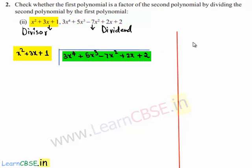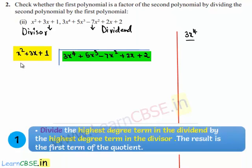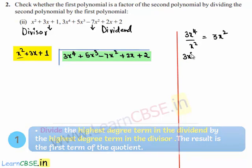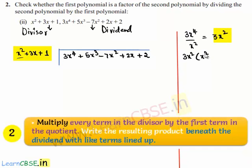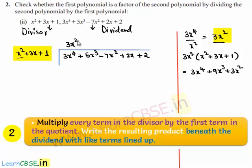The highest degree term of the dividend is 3x⁴ and the highest degree term of the divisor is x². On dividing them we get 3x². So 3x² multiplied by x² plus 3x plus 1 gives 3x⁴ plus 9x³ plus 3x². The quotient term 3x² and this product are written accordingly.